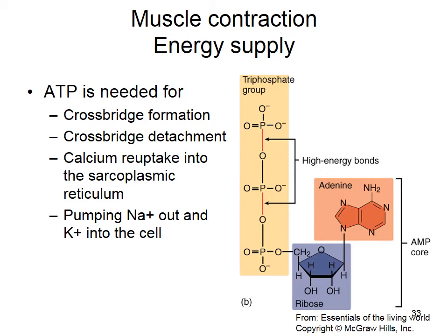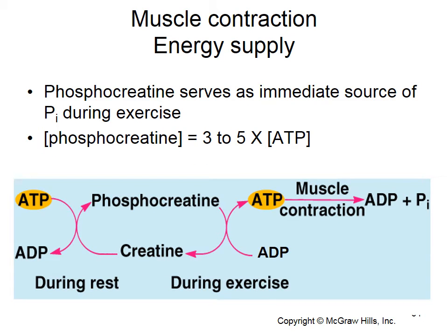ATP has three phosphate groups that don't want to be next to each other. Breaking those bonds releases energy that myosin uses to move actin, calcium pumps use to pump calcium back in, and sodium-potassium pumps use. Free ATP in muscles is depleted within seconds — the amount is really low and quickly runs out.